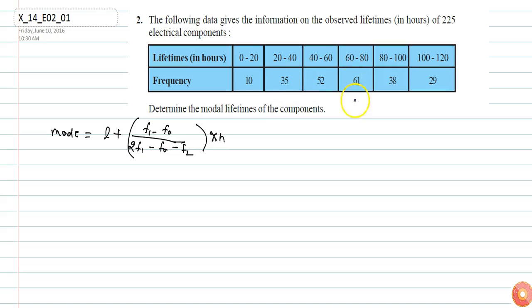We can see that 61 is the maximum class frequency corresponding to the class 60 to 80. The maximum class frequency is 61, so our modal class will be 60-80. Now, the value of L is the lower limit of the modal class.